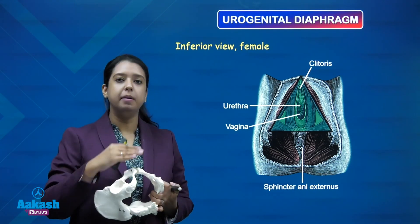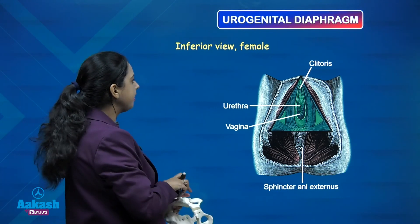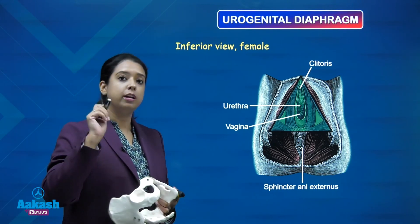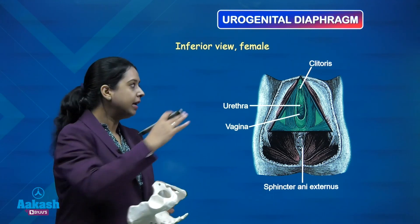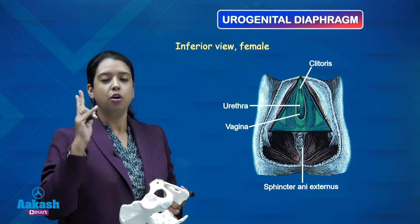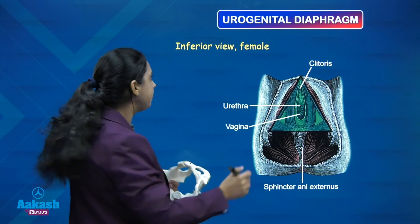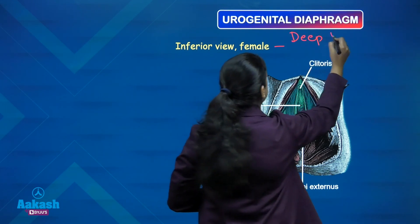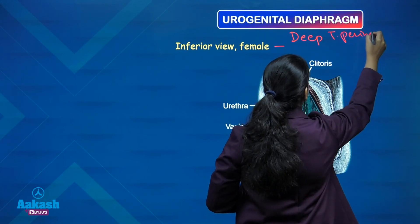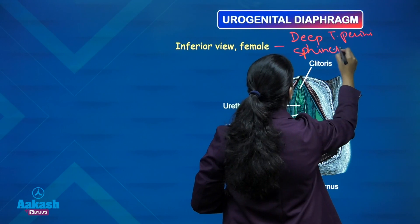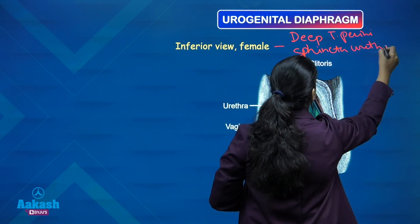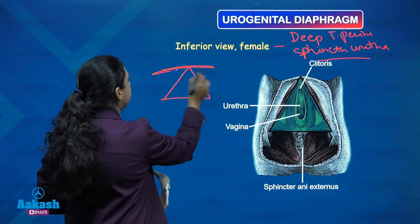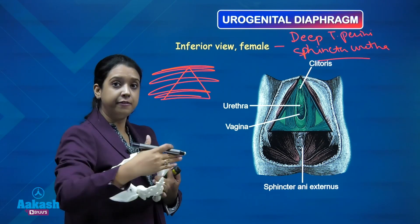The urogenital diaphragm is covered by fascia. Just like the pelvic diaphragm, the urogenital diaphragm is also made of muscles. Two muscles form the urogenital diaphragm: deep transverse perinei and sphincter urethrae. These two muscles together form your urogenital diaphragm, a muscular diaphragm. This muscular diaphragm is covered by fascia inferiorly and superiorly.